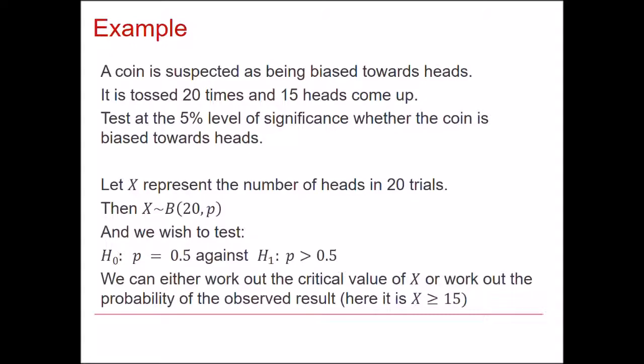You can either work out the critical value like we did before. So where we said that if it was 13 or more, we would reject H0 for number of ones on a four faced dice. Or you can calculate the probability of the observed results. So we've got an observed results of 15 heads.